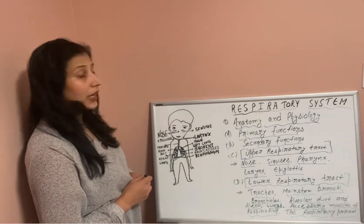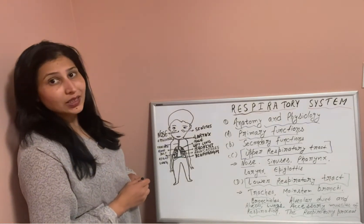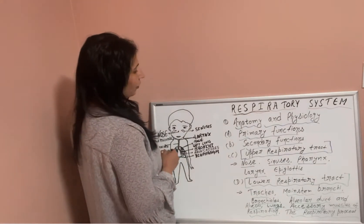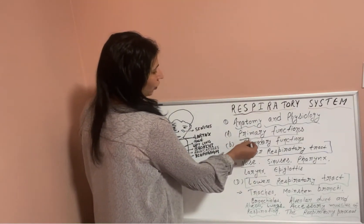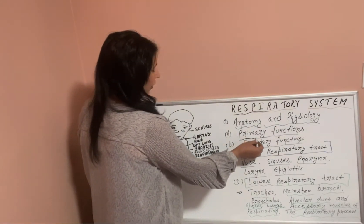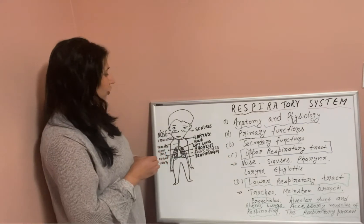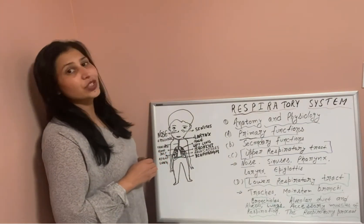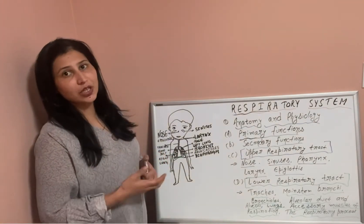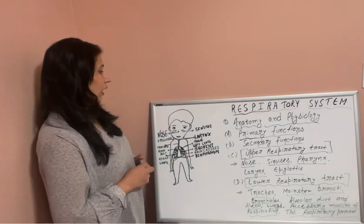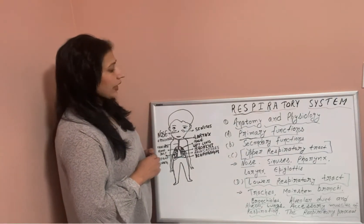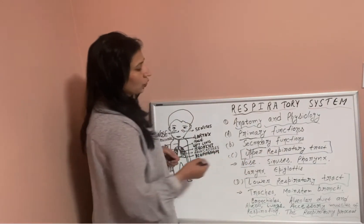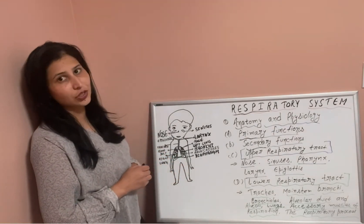First, the primary function of the respiratory system is inspiration — breathing in and out. The secondary function of the respiratory system includes smelling and coughing.